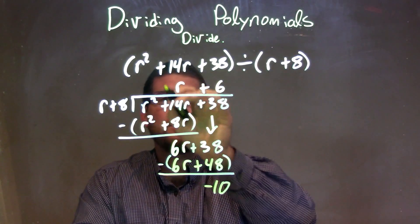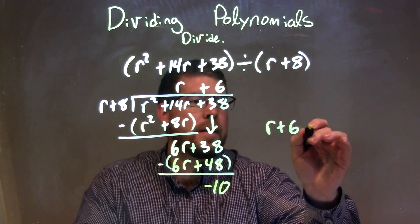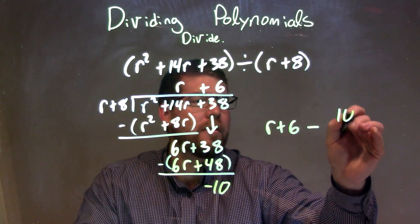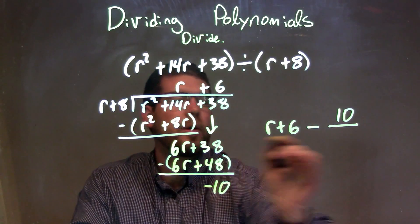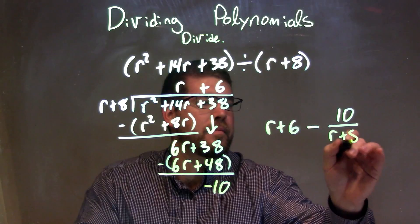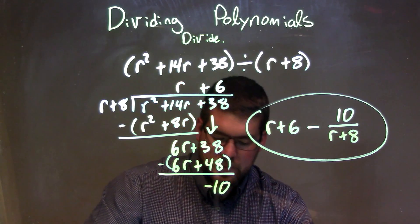So we write our final answer. We write that r plus 6 is up there. Minus 10, our remainder, over r plus 8, our divisor. And that is our final answer.